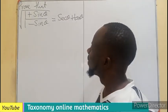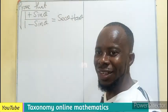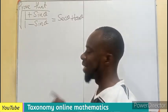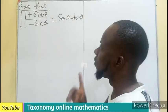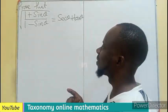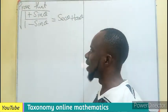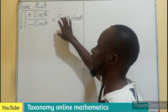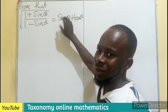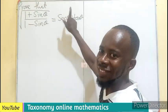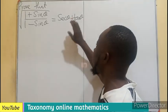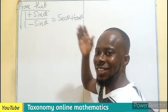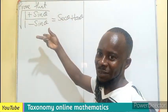Welcome. Let's solve this trigonometry question. We have to prove that the square root of 1 plus sine theta divided by 1 minus sine theta is the same as secant theta plus tan theta. So let's deal with the left hand side.